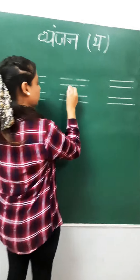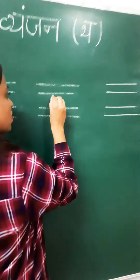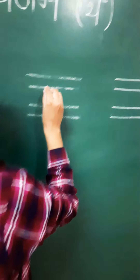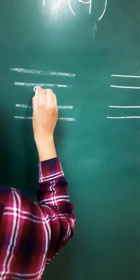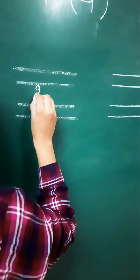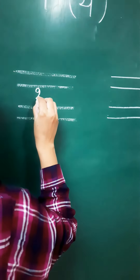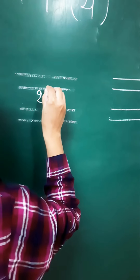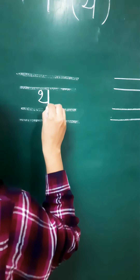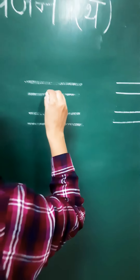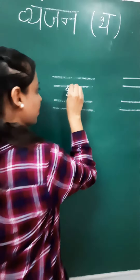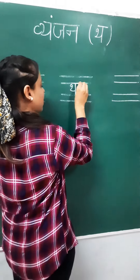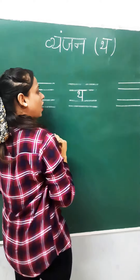Look again: small loop, curve, another curve, standing line, and the final sleeping line.